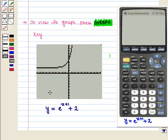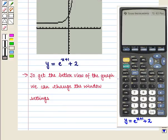will appear on the coordinate axis. Now to get the better view of the graph, we can change the window settings.